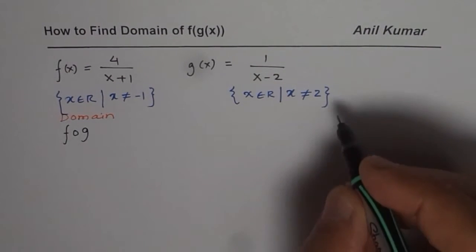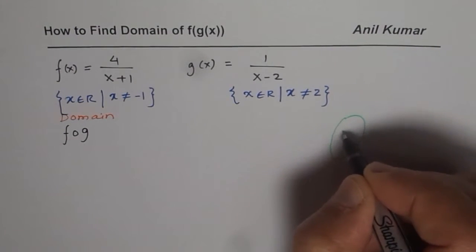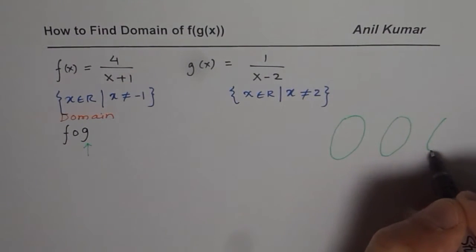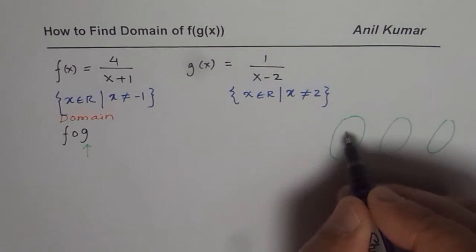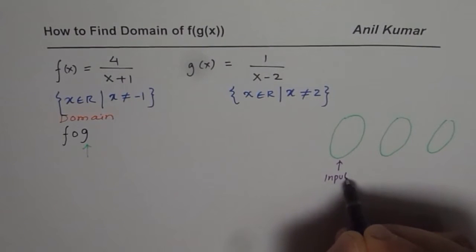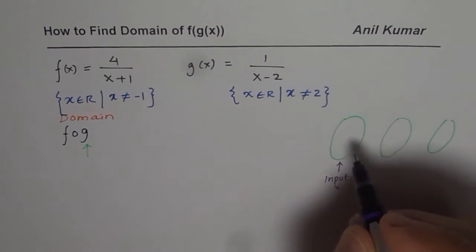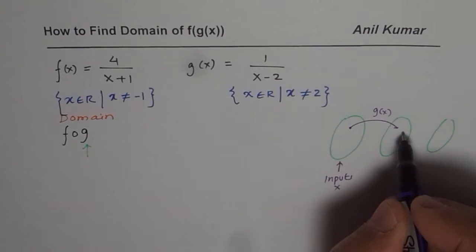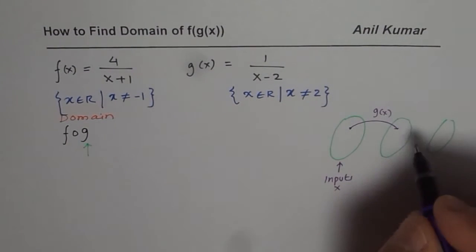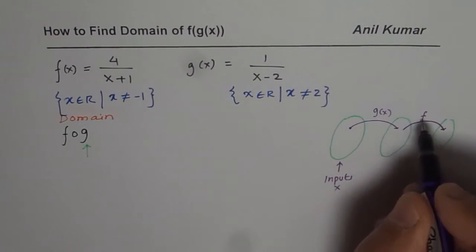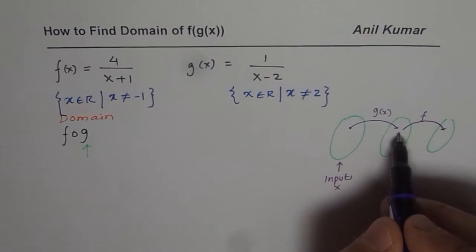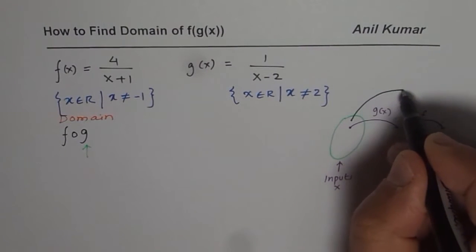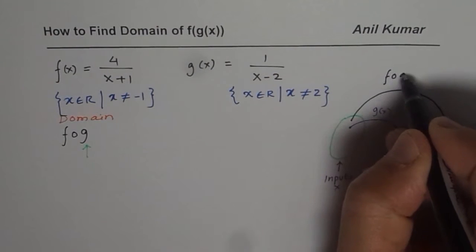Let's understand the concept. We have inputs on which the operation g(x) is first performed. The range of g(x) then becomes the domain for f. So f(g(x)) is a link from the original inputs through g and then through f — that is how the composite function works.